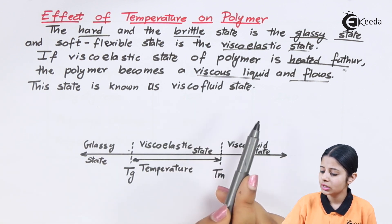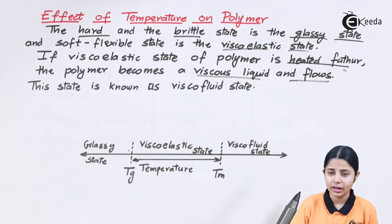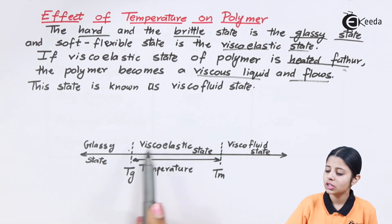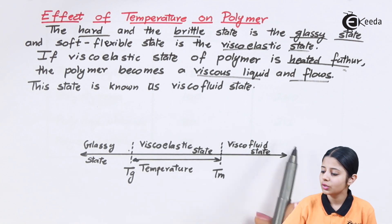This is known as the viscofluid state. Over here they have given a diagram. I have the states. First is glassy, second is viscoelastic state, the third is viscous fluid state.